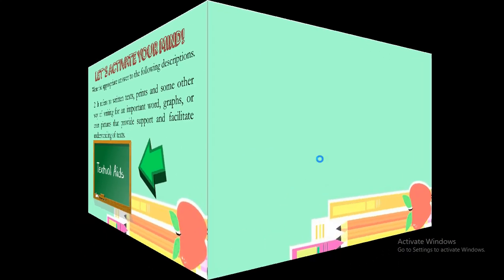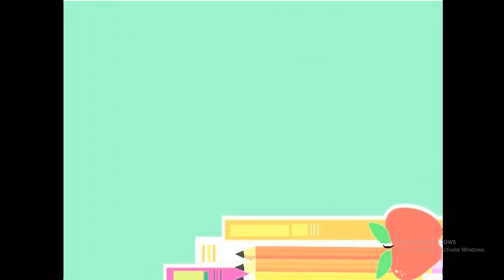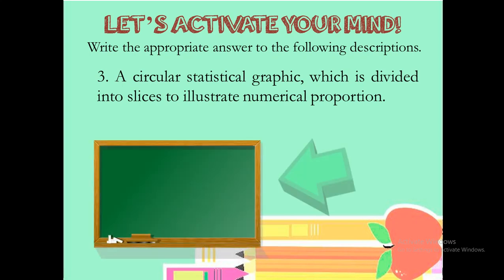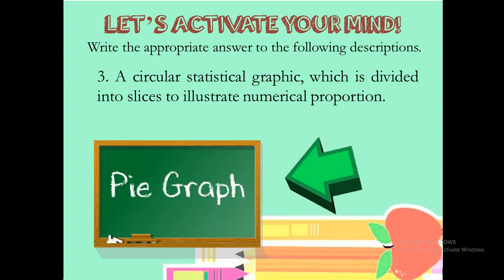Number three. A circular statistical graphic which is divided into slices to illustrate numerical proportion. Remember our clue, circular and slices. Your answer would be pie graph. That's correct.